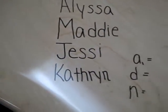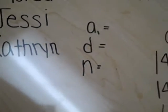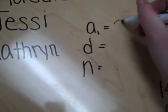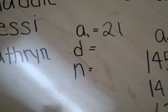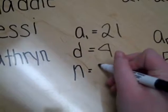The problem asked to express the following sum using summation notation. We found that our a₁ value was 21, our d value was 4, and our n value is unknown.